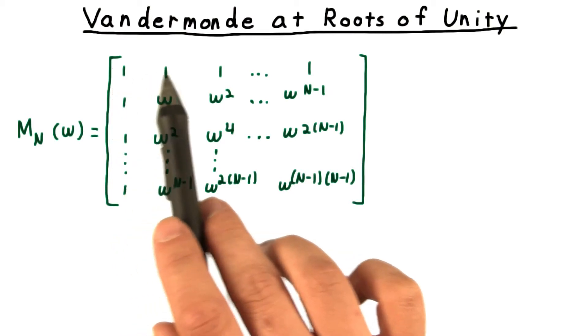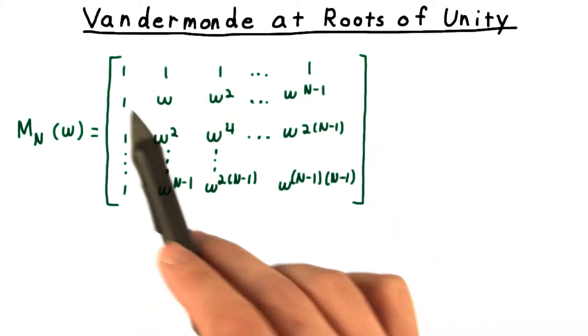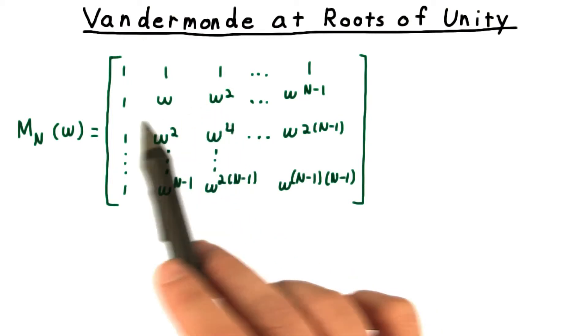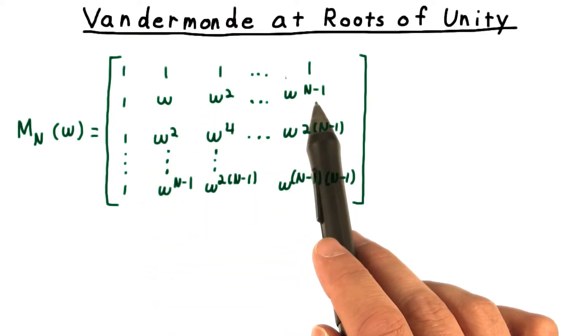So for one, the powers are all one. The powers of omega are one, then omega, then omega squared, all the way up through omega to the n minus one.